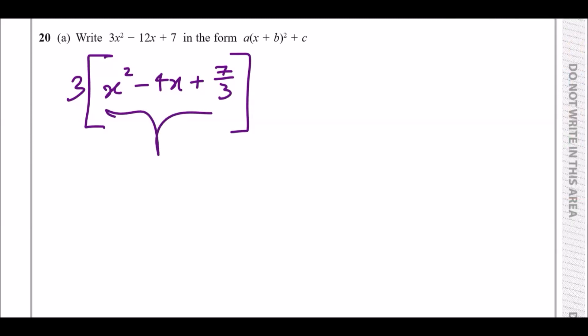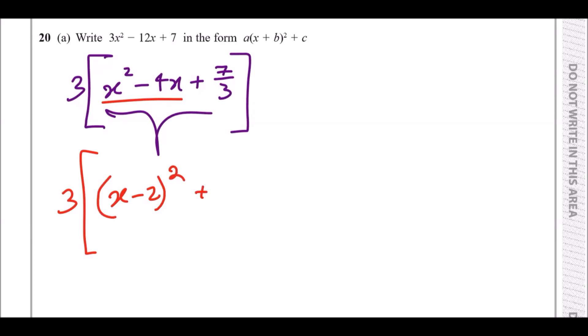Using a big square bracket to complete the square, underline the first two terms and then wrap it with half the second term. You get x minus two, all squared. Copy the third term plus seven over three, and then minus the value just factored and squared — so two squared.